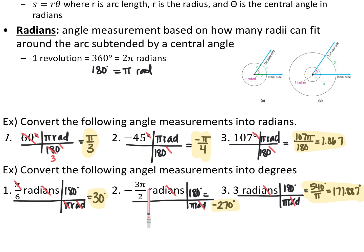Going the other direction, negative 3 pi over 2 radians converts to negative 270 degrees. For 3 radians, multiply by 180 over pi to get 540 over pi degrees, or approximately 171.887 degrees. Keep in mind that 360 degrees equals 2 pi radians, or equivalently 180 degrees equals pi radians.